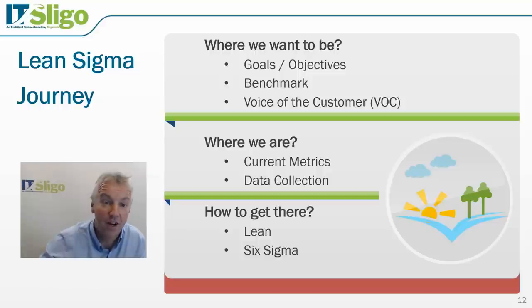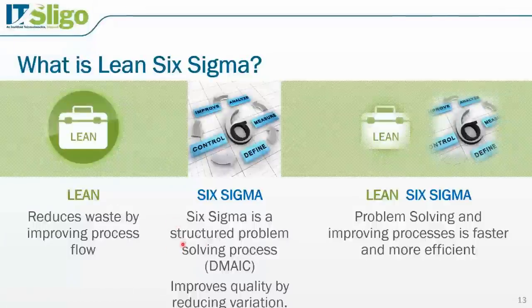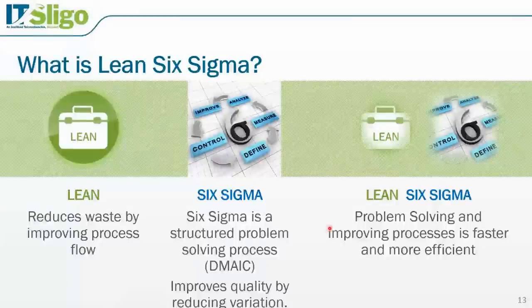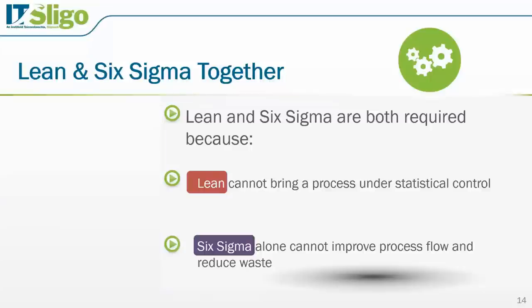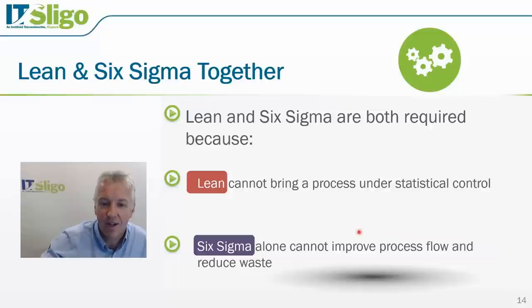So what is Lean Six Sigma? Lean — you'll see the word 'waste' — is about reducing waste by improving process flow. Six Sigma is a structured problem-solving process; it's also associated with very low defect rates of 3.4 parts per million, and it improves quality by reducing variation. When you put both Lean and Six Sigma together, you get a structured problem-solving process, improved and faster processes, and greater efficiency. Lean alone doesn't address quality elements or statistical control, and Six Sigma alone doesn't address process flow and waste reduction — so both are required.